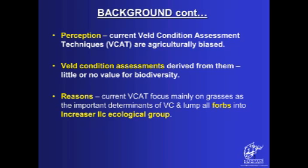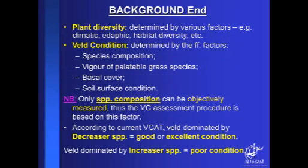This particular group is the most desirable from a veld condition perspective. Land diversity is determined by various factors including climatic, edaphic, and habitat diversity, whereas veld condition is determined by factors such as species composition as well as soil surface condition. Out of these factors, only species composition can be objectively measured, which means the other factors have a degree of subjectivity in their measurement. Due to this reason, the veld condition assessment procedure is based on species composition.